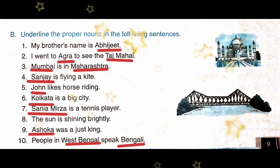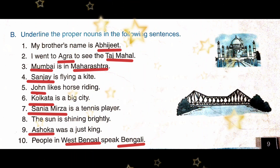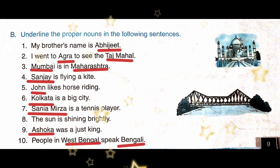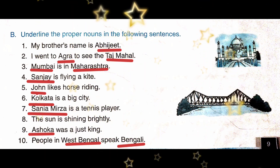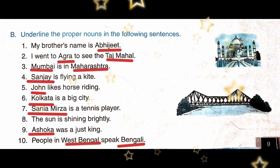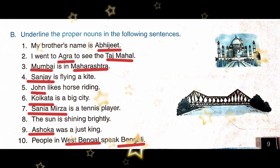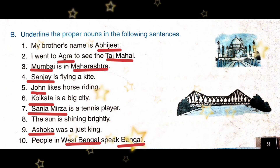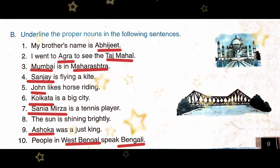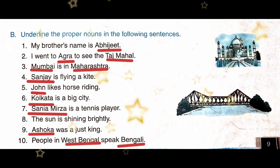Some of you might be thinking why 'people' is not a proper noun. Recall the definition — a proper noun is the name of a particular person, place, animal or thing. So, people is not for a particular person; people means log. Don't get confused — you are all well aware that we write the first letter in capital.